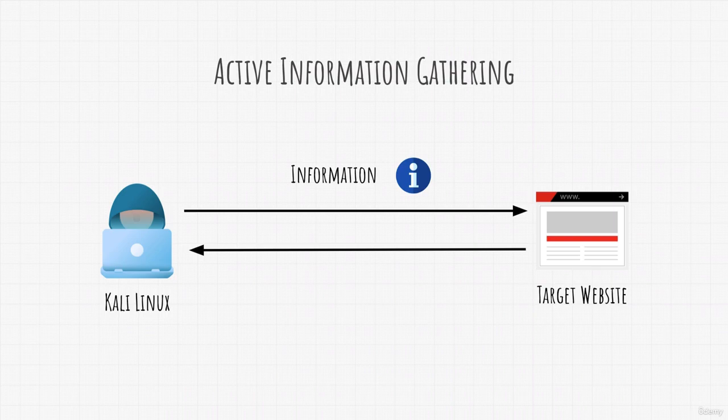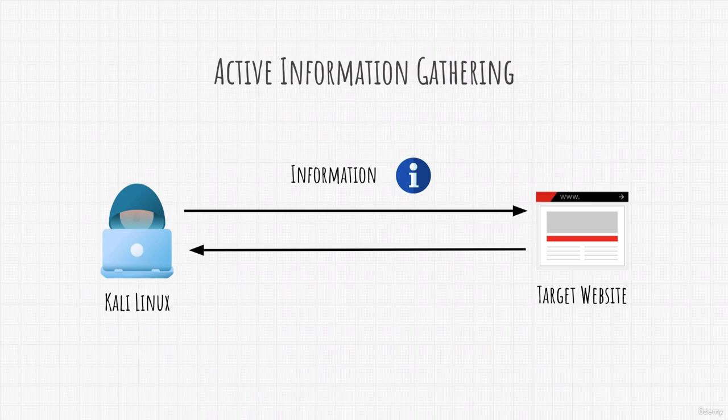This could mean directly exchanging packets with the target by visiting and enumerating their website, or it could mean talking to an employee that works there. We could call them over mobile phone to try to get them to tell us something important, but this part is also considered social engineering. Any action where you exchange something with the target is active information gathering.